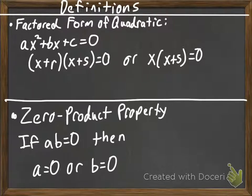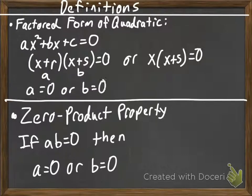Now, alright, what we're going to do is, let's say that, let's call x plus r a, and let's call x plus s b. Well, we know that we can set a equal to 0 or b equal to 0. Well, that's exactly what we're going to do.